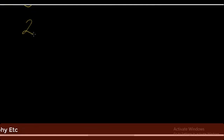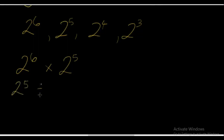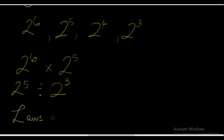Now let's bring the numbers down: 2 raised to the power 6, 2 raised to the power 5, 2 raised to the power 4, and 2 raised to the power 3. Supposing we want to perform operations like 2 raised to the power 6 multiplied by 2 raised to the power 5, or 2 raised to the power 5 divided by 2 raised to the power 3. For you to be able to perform these kinds of operations, we have to follow certain rules, or guidelines, referred to as the laws of indices. So let's go to study the laws of indices.